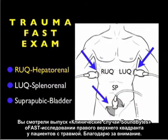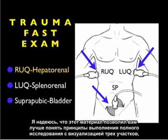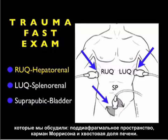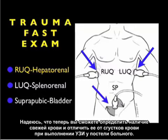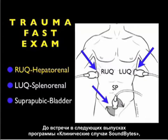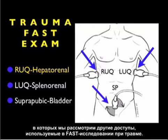In conclusion, I'm glad I could share this part two module on the right upper quadrant view of the trauma FAST exam. I hope you now have a better understanding of how to perform a complete exam looking at the three areas we discussed: infradiaphragmatic, Morrison's pouch, and inferior tip of the liver. Hopefully you'll now be able to discern the presence of fresh blood versus clotted blood on bedside sonography. I hope to see you back as SANO Access continues and as we move further through the other views of the trauma FAST exam.